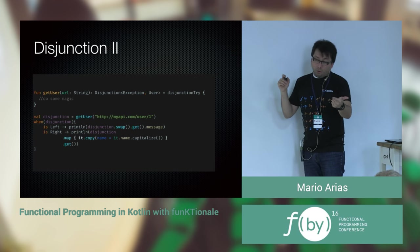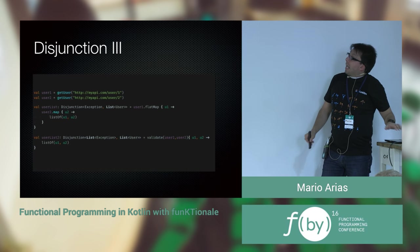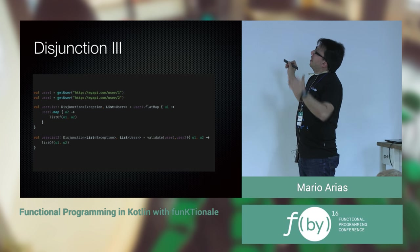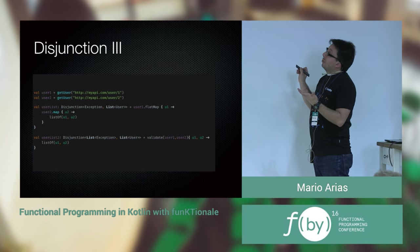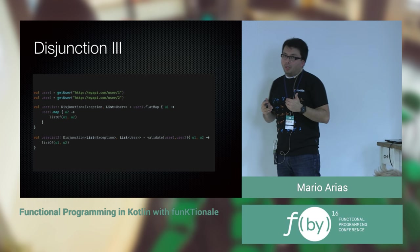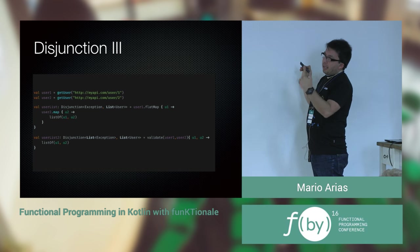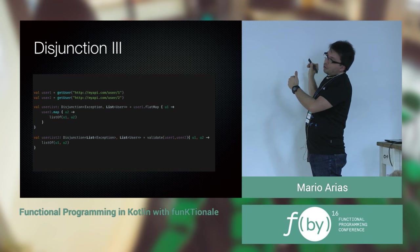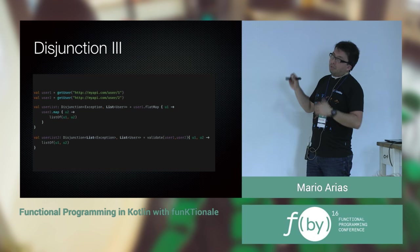With disjunctions you can have nice flat maps and maps that look really clean. For example, with two users, I can check at the end whether I have all my users or an exception — that's an atomic operation: either I get all users or I get an exception. But what if I want a list of exceptions? There's a `validate` function — I pass a series of disjunctions and operate on them, and it returns either a list of users or a list of exceptions, not just one.